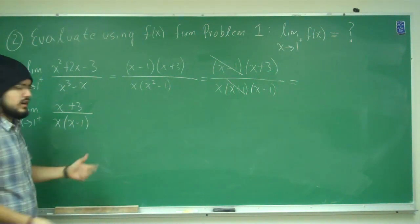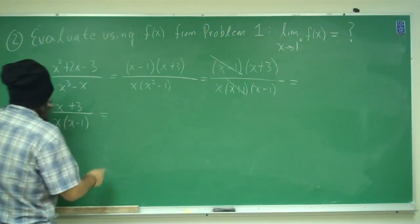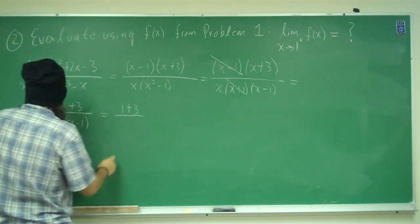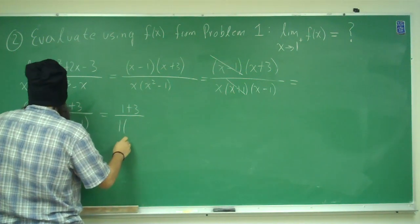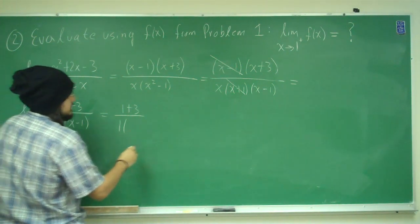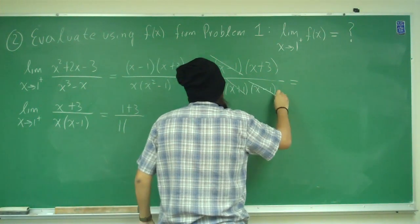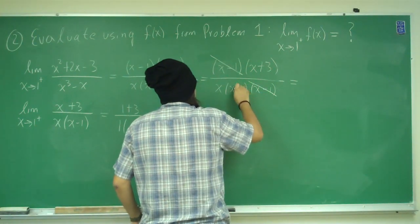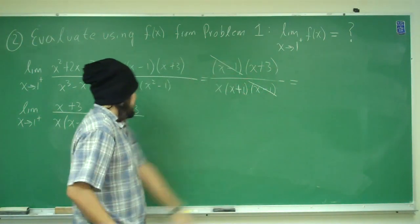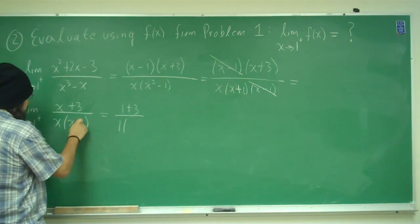Alright, now let's go ahead and try to plug in the 1 now. Alright, so plug in 1, we get 1 plus 3 divided by 1 times... did I cancel? Yeah, I'm supposed to cancel out this one, sorry. So that's x plus 1 here. x minus 1 and x minus 1 cancel out. So that's x plus 1, alright, good.